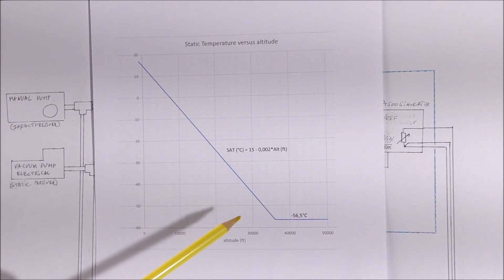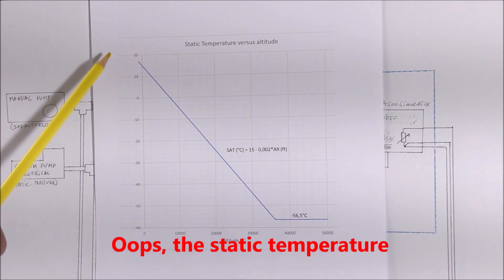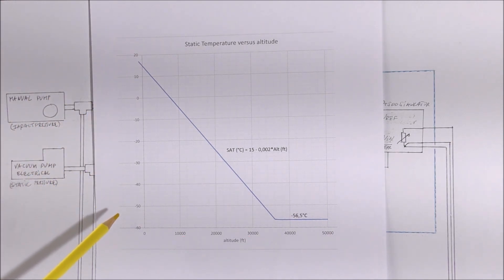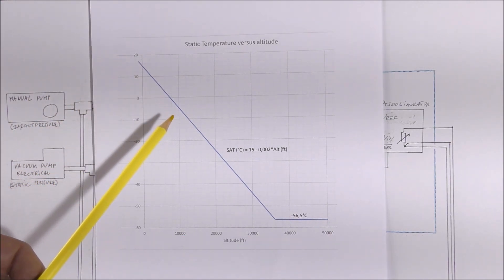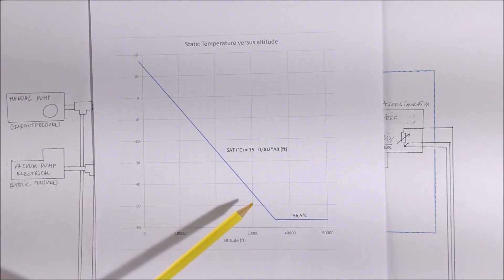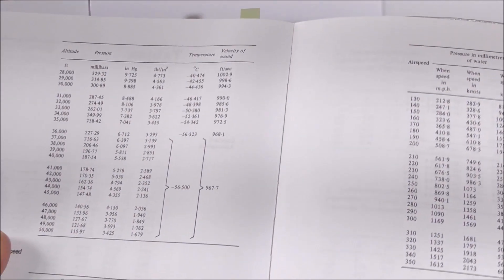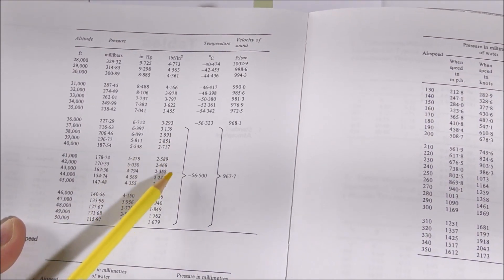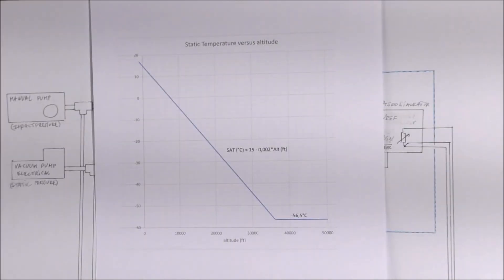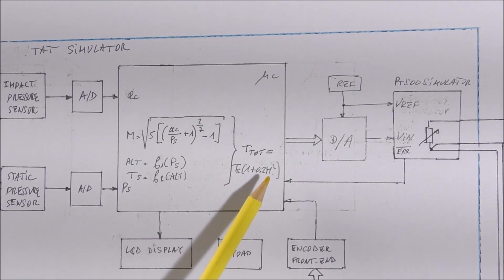From the altitude, it is also possible to compute the static temperature, which is on the y-axis in degrees Celsius. We can see that there is a linear decrease of the temperature versus altitude, and there is a minimum temperature above 36,000 feet, according to this table. So from the static temperature in Kelvin, and using the Mach number, it is possible to compute the total air temperature.